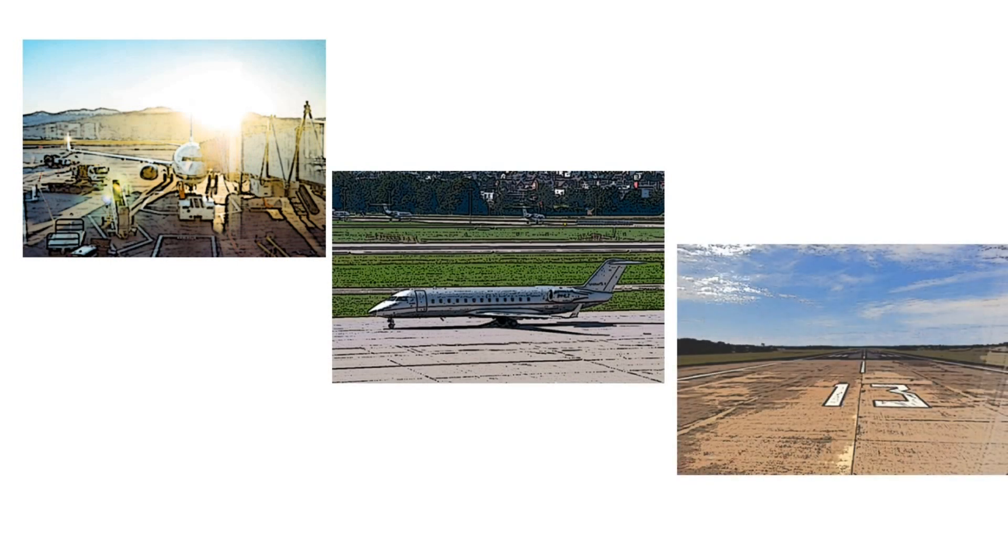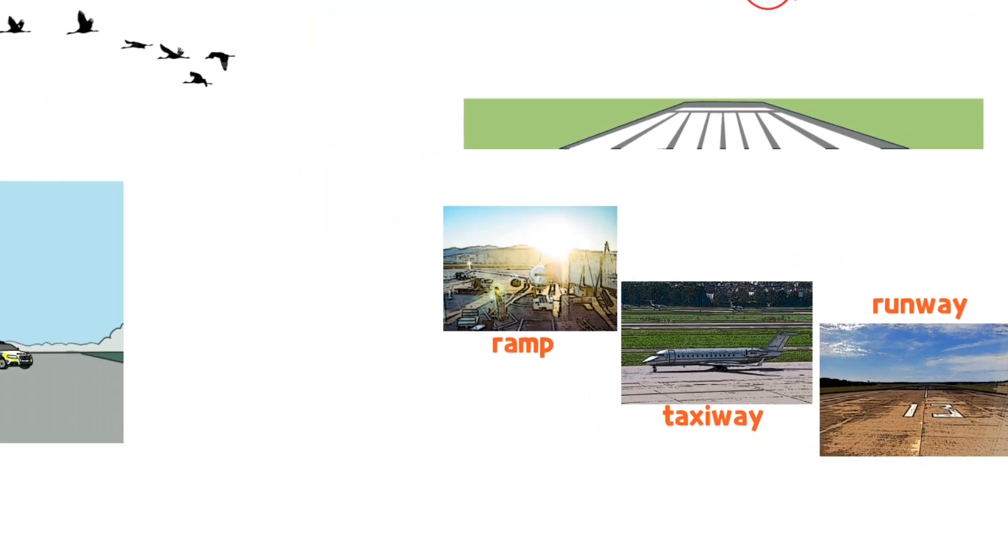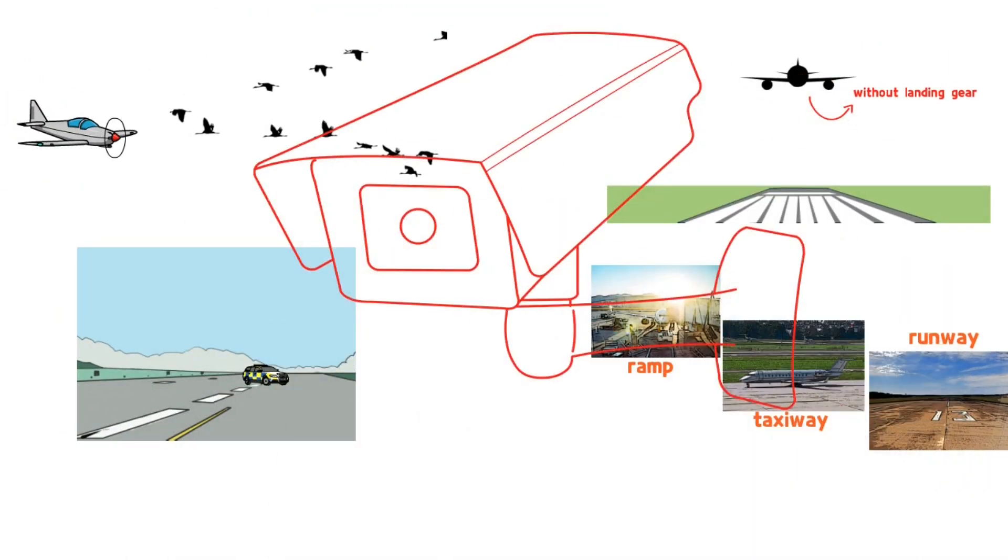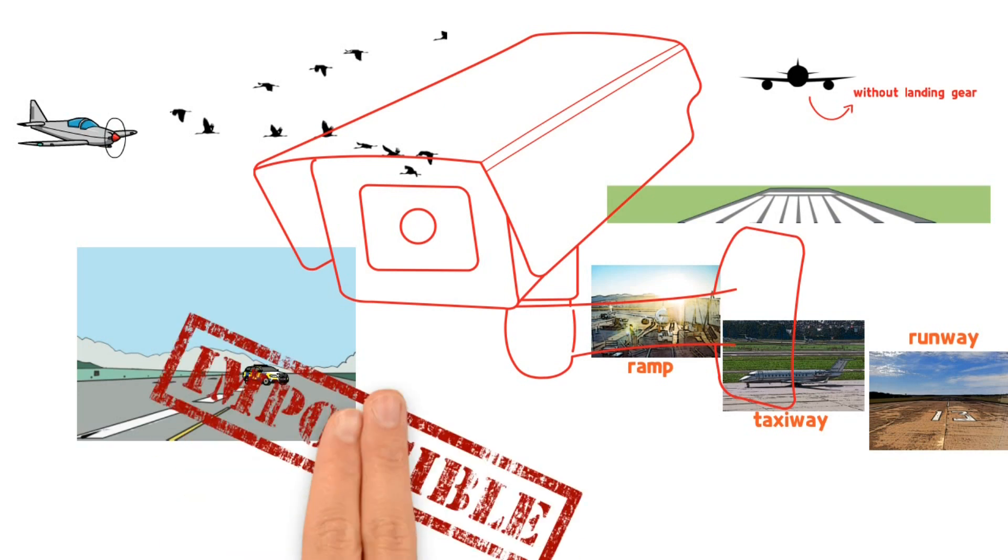In addition, all aircraft's movement areas of the airport must be monitored including ramps, taxiways, and runways. Can all of these situations be controlled by a surveillance device like a CCTV? Impossible!